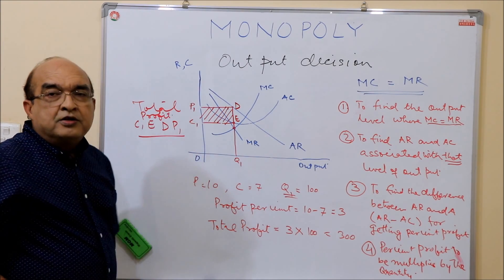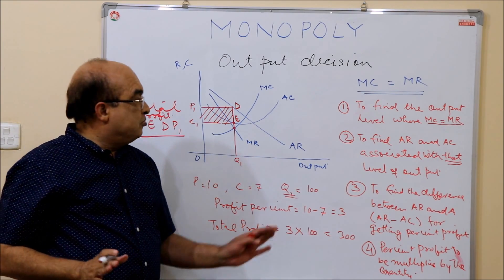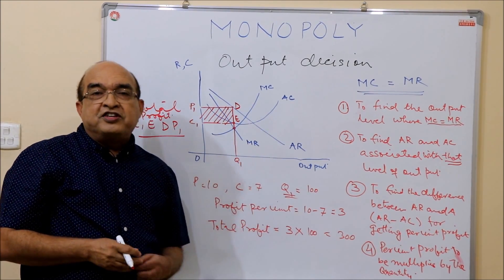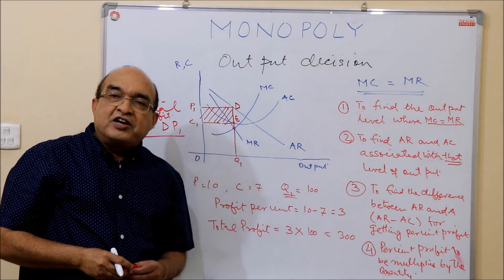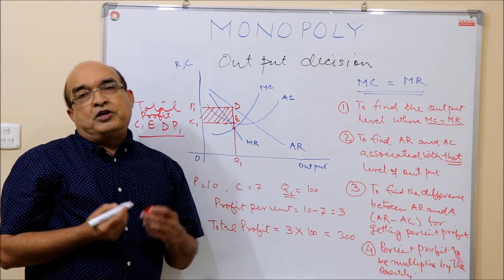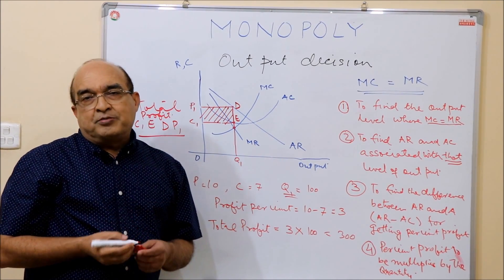So these are the four steps through which you can find the output level that ensures maximum profitability. This covers the output decision and the profit level of a monopoly. Thank you very much.